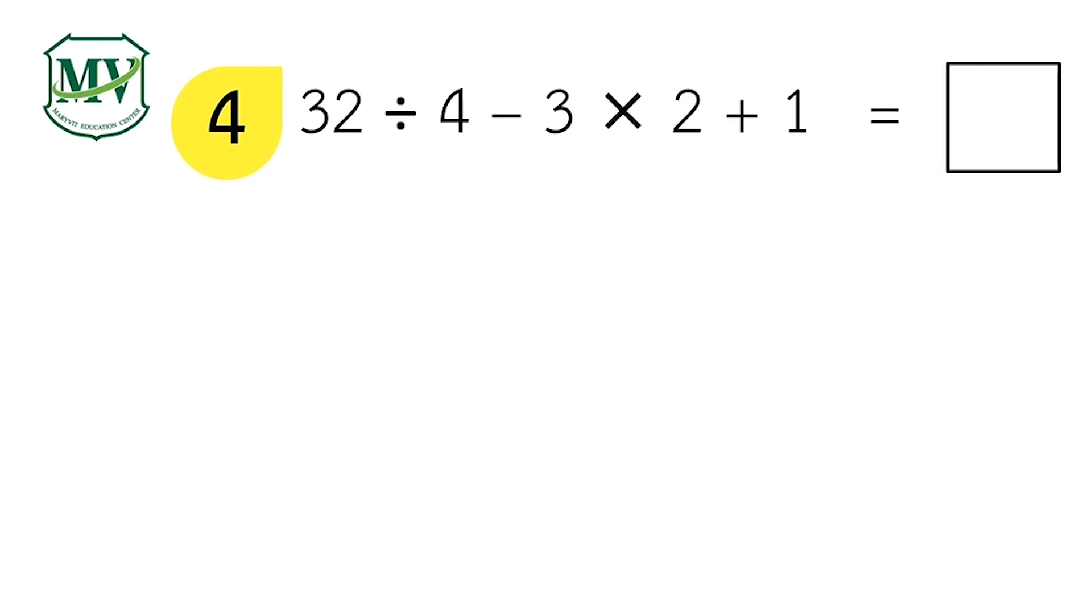Question No. 4. 32 divided by 4 minus 3 times 2 plus 1 is equal to what number? Let's check. Do you remember the PEMDAS rule?